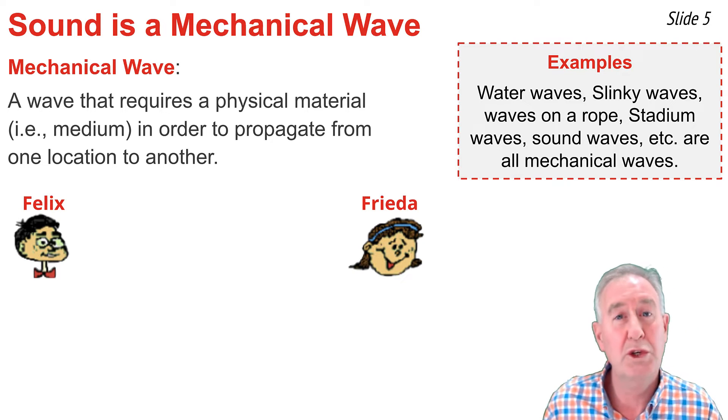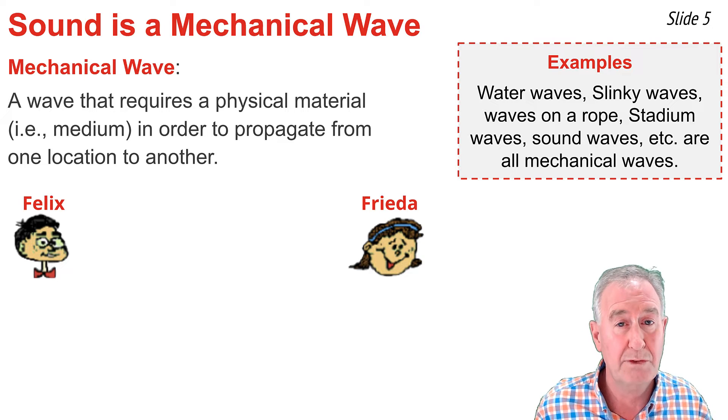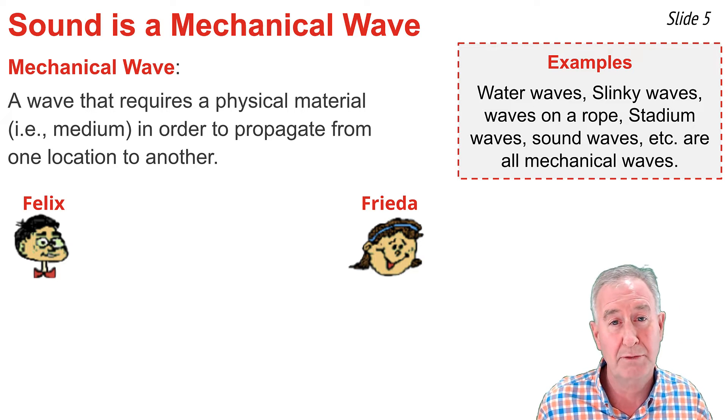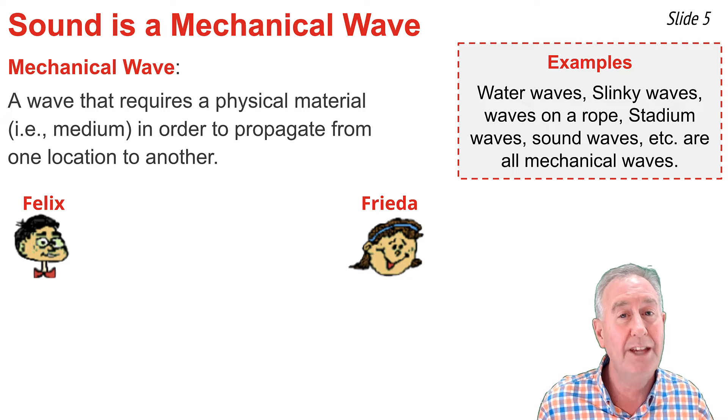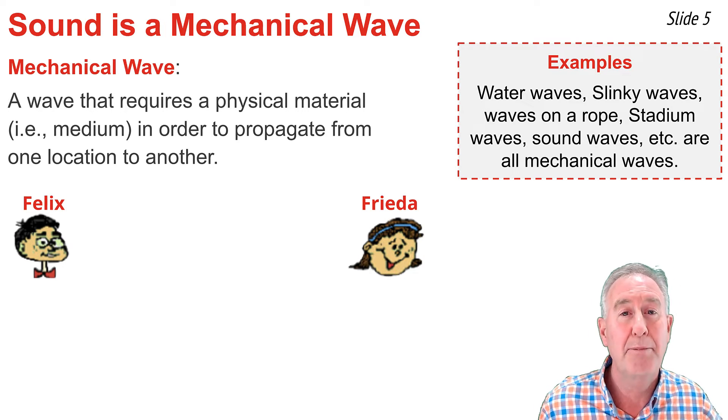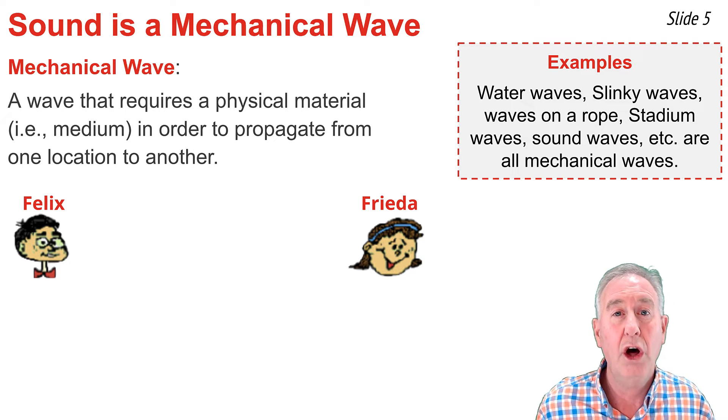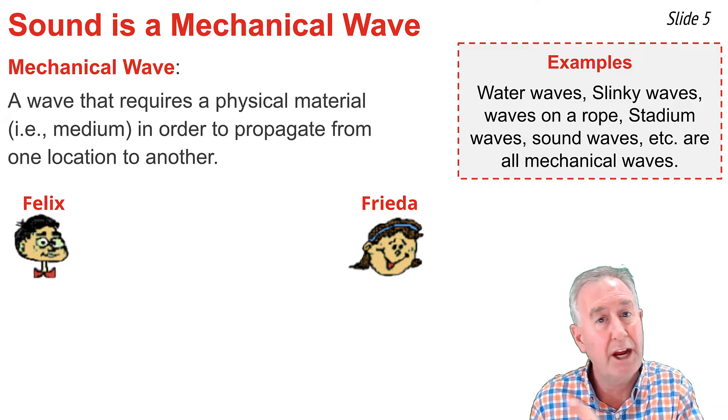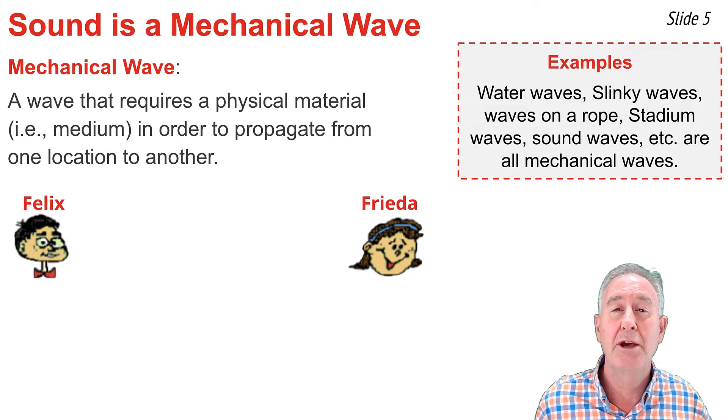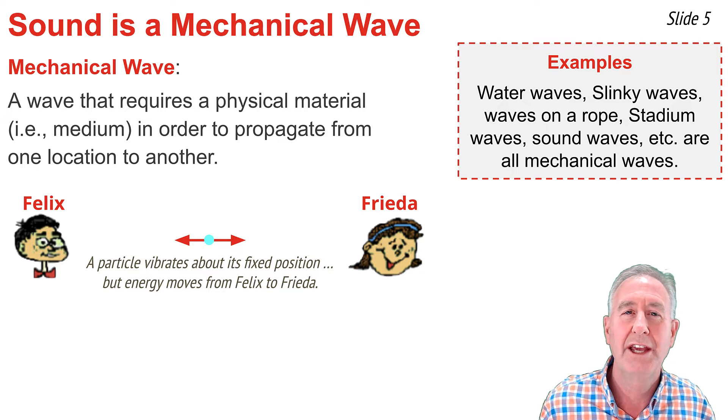Here is Felix who is talking to Frida. In order for the sound of Felix's voice to move from Felix to Frida, there must be something in between Felix and Frida to propagate the vibrations caused by Felix's vocal cords. That something is air. A whole collection of particles of air between these two locations becomes set into back-and-forth vibrational motion in order for the sound wave to travel from the source to the observer.